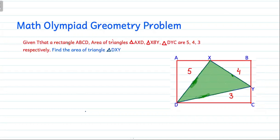The question is: given rectangle ABCD, the area of triangle AXT is 5, triangle XBY is 4, and triangle DYC is 3. Find the area of triangle DXY. You can see here the area of triangle AXT is 5, XBY is 4, and DYC is 3. We have to find DXY.